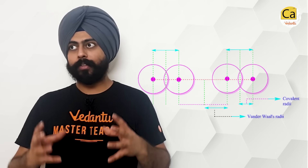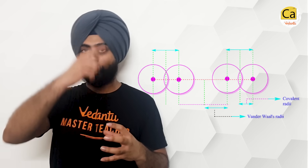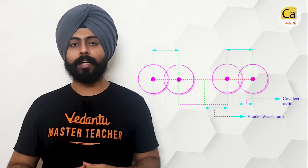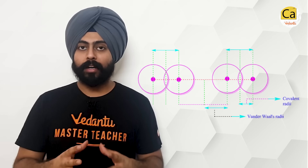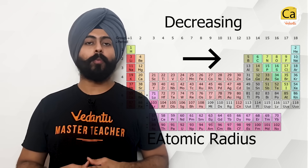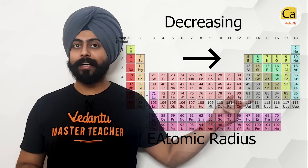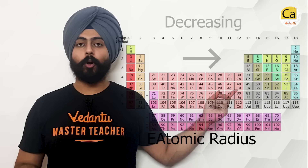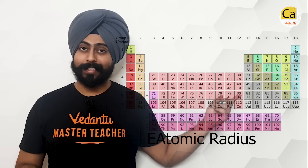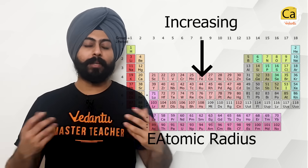If one species had all three types of radius measured, Van der Waals radius would be the longest, then metallic radius, then covalent radius. Talking about the general trend of atomic radius: from left to right it keeps on decreasing, and from top to bottom it keeps on increasing.